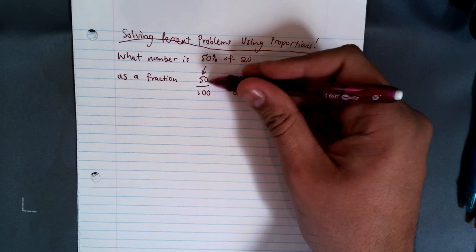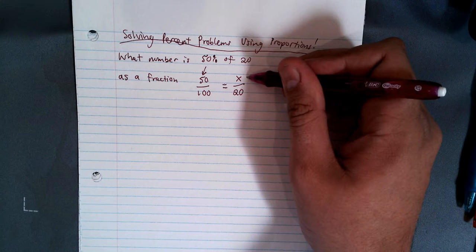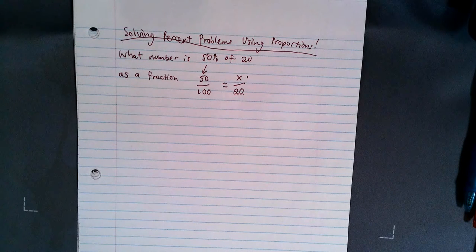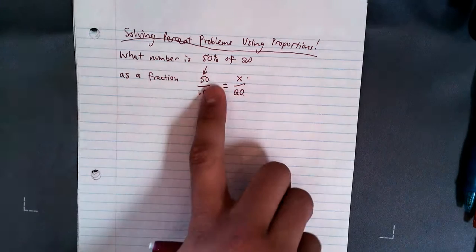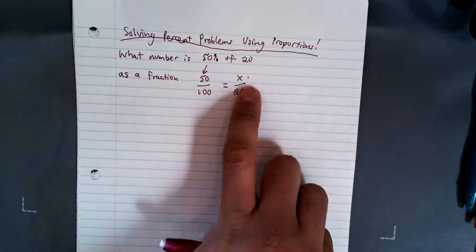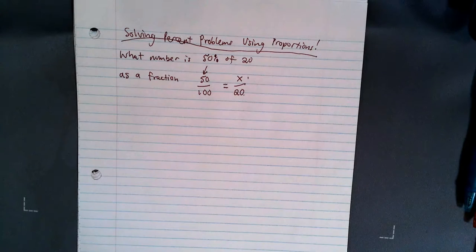So since we're using proportioning, we can set this up as an equation. We know that 50 over 100 is going to equal something out of 20. If 50% is half of 100, some number is half of 20. That's the way we're going to set this up. What number is 50%? 50% is this. Of 20 we said. A number is 50% out of 20. We're going to set it up that way.